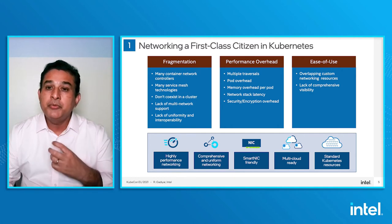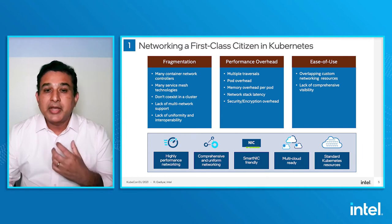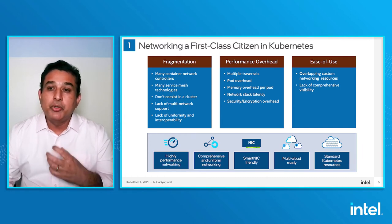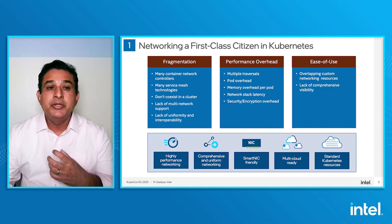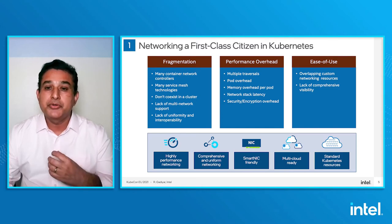We have to reduce overheads, make network capabilities uniform, address performance and latency challenges, support offloads and acceleration with the right infrastructure for smart NICs, and make it multi-cloud ready.